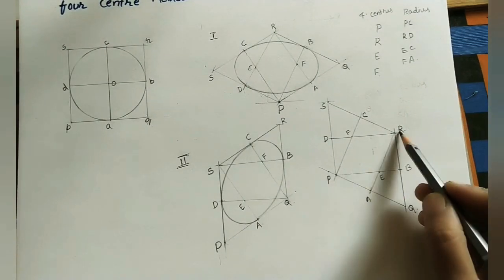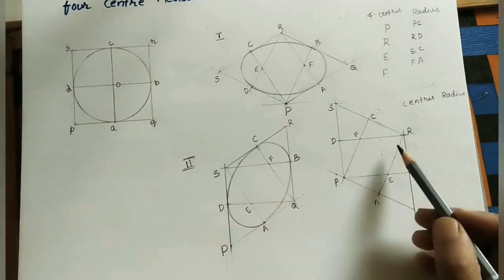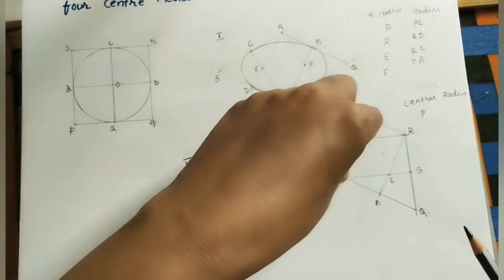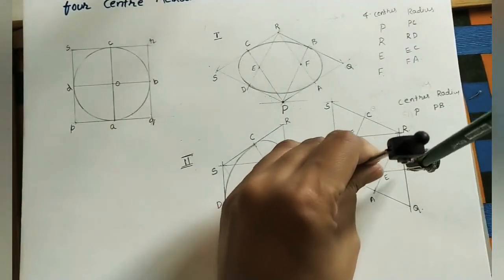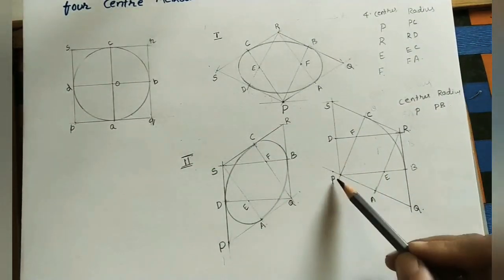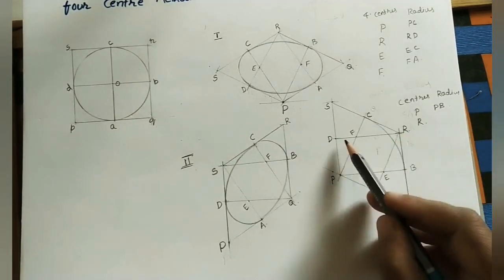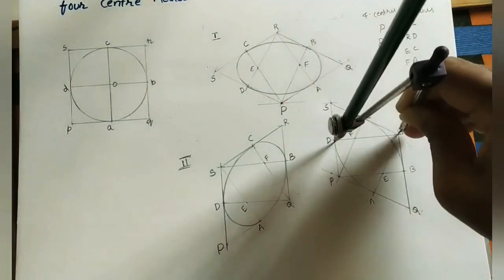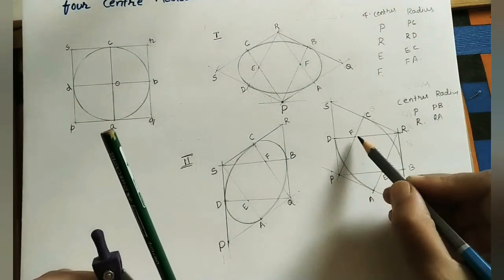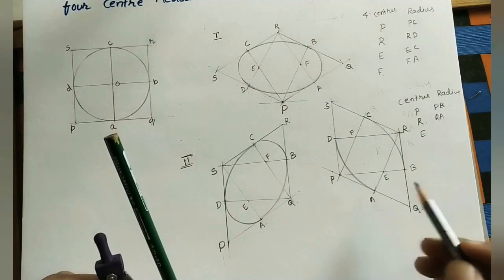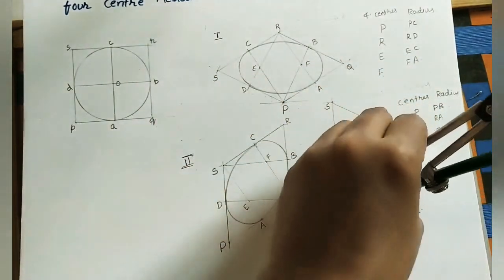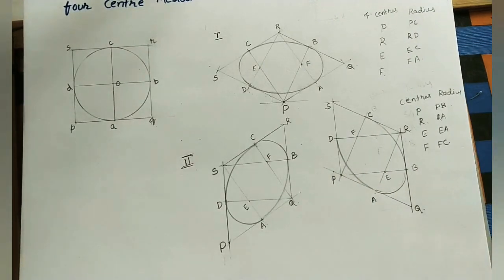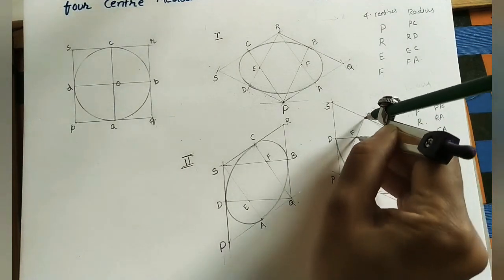With P as center and PB or PC as radius, do an arc. With R as center and RA or RD as radius, do an arc. With E as center and EA or EB as radius, do an arc. With F as center and FC or FD as radius, do an arc. Joining all four arcs gives the complete isometric ellipse for this variant.